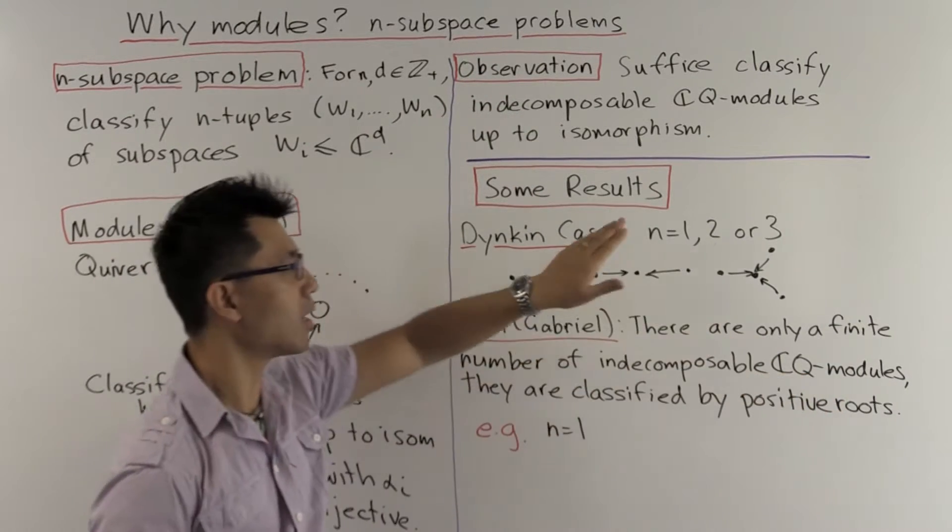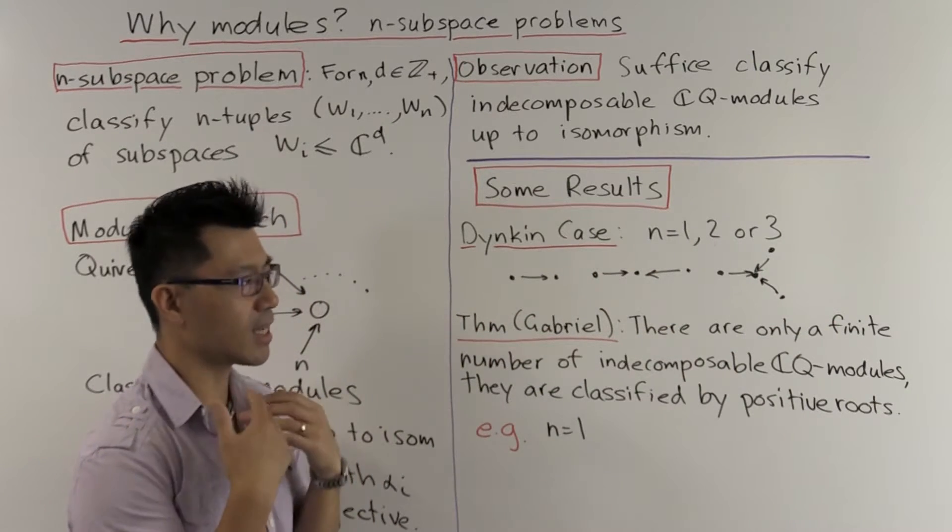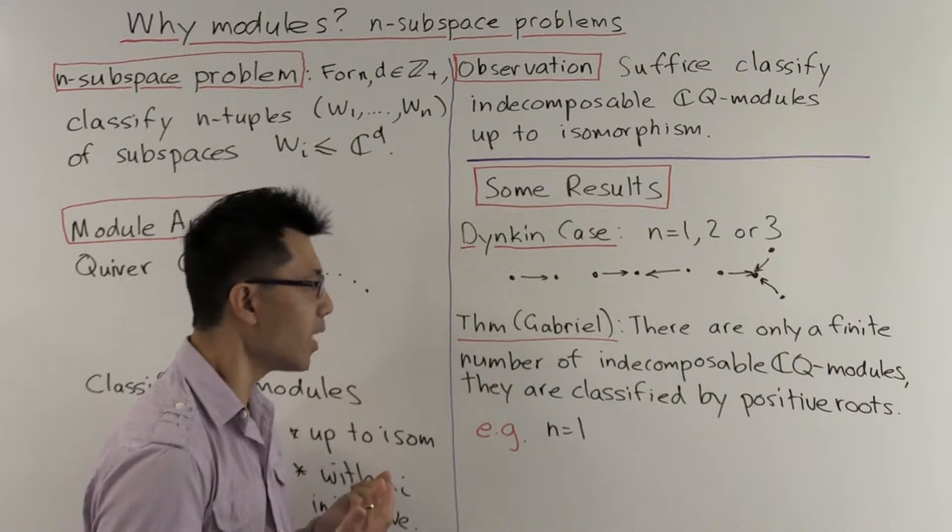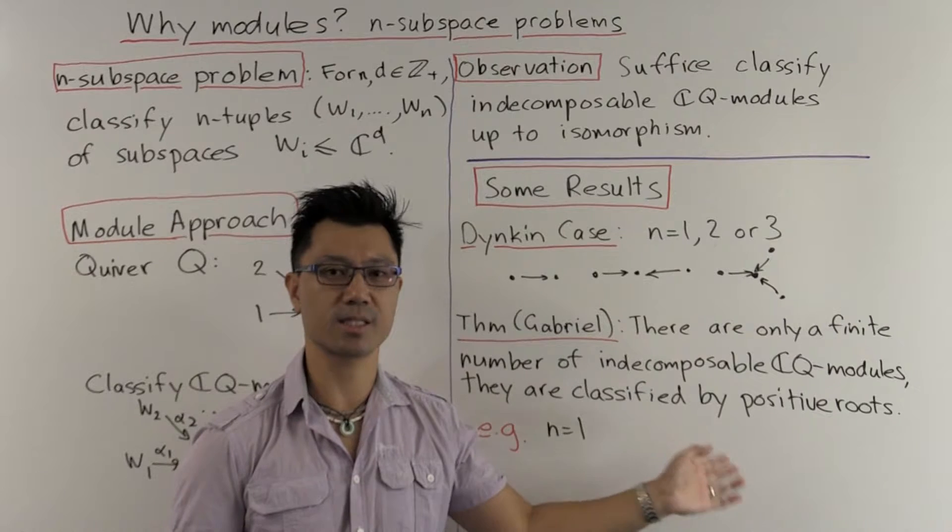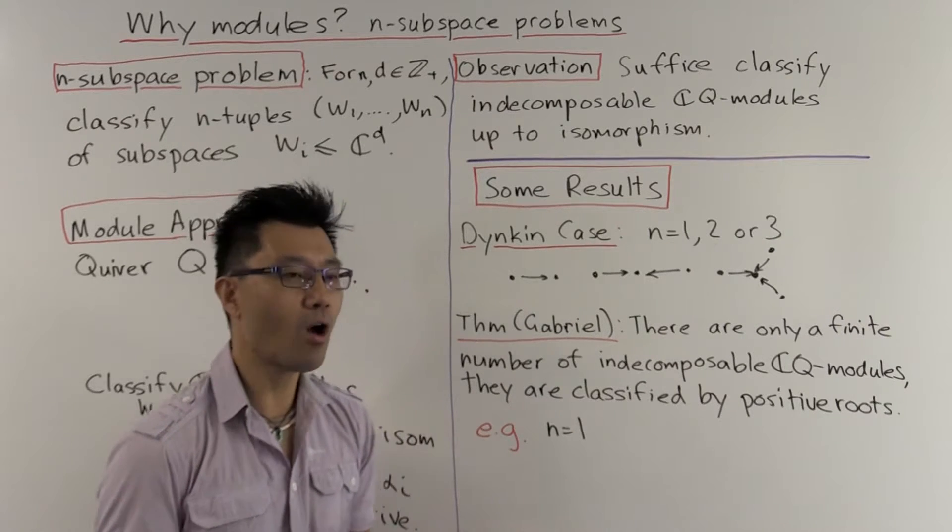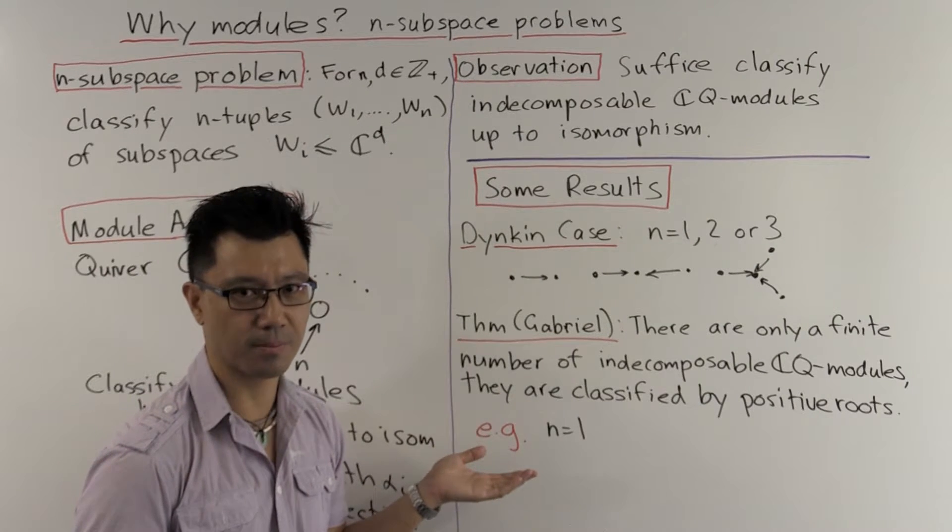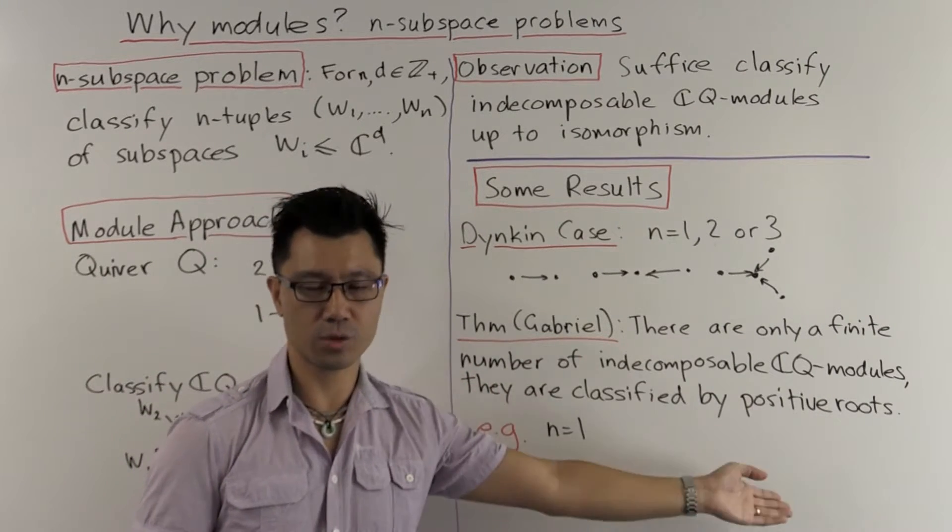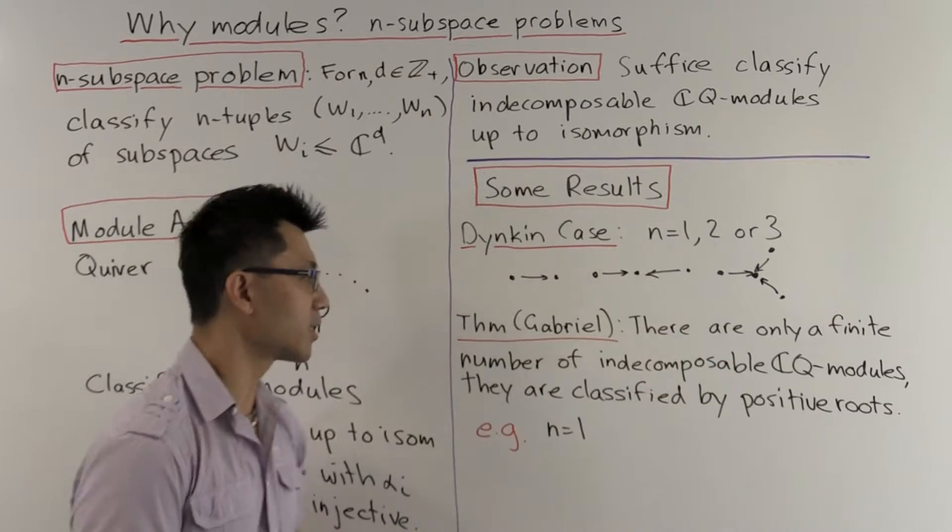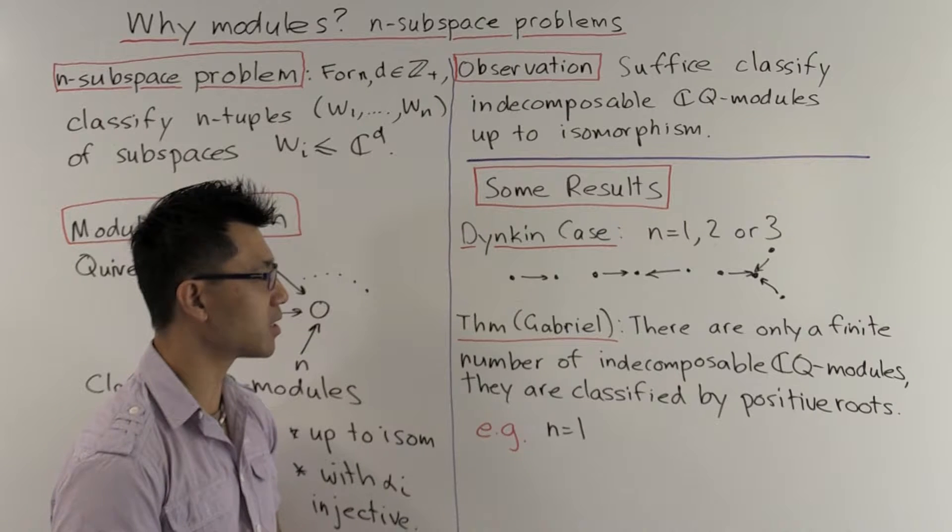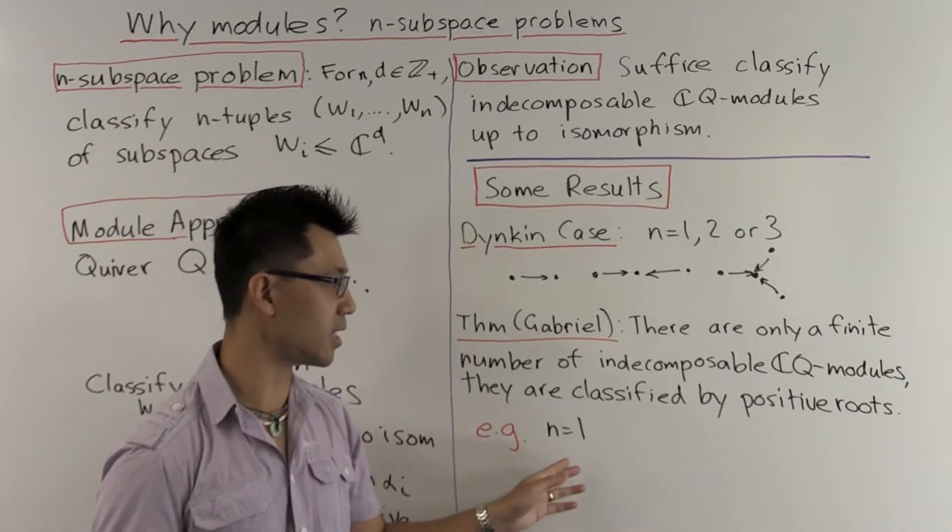There's a very celebrated theorem of Gabriel's, which tells you all about the module theory of this path algebra CQ in this case where n equals 1, 2, or 3. It states that the number of indecomposable CQ modules in this case is just finite. And he moreover tells you more or less what they are and classifies them. They are classified by the positive roots corresponding to these Dynkin diagrams.